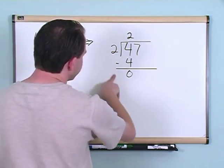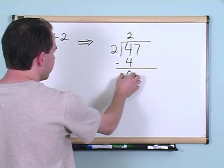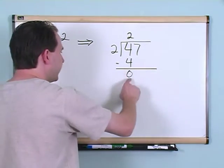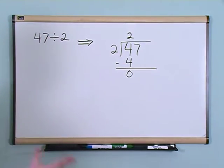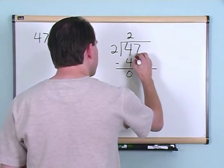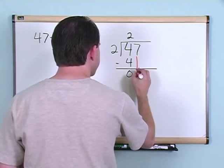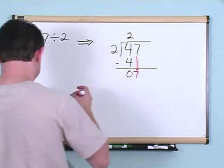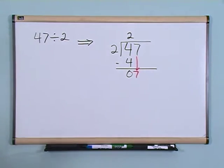You can't take 2 and divide it into 0 because in order to do division, the number you're dividing into has to be bigger than this number, so you can't do any more division. But you do have this 7 sitting out here, so what I'm going to do is I'm going to draw an arrow and I'm going to put this 7 down here.